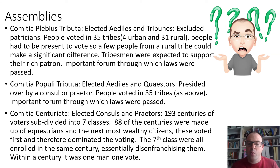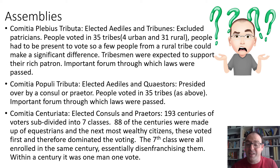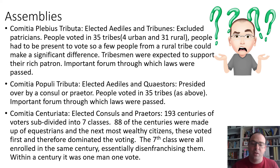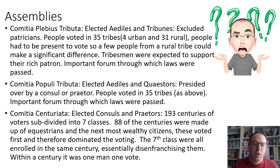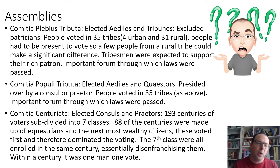Turning to the assemblies: the comitia plebis tributa elected aediles and tribunes, excluded patricians, and people voted in the 35 tribes. Since you had to be present to vote, a rural tribe could be dominated by a small group of people with the money, wealth, and influence to travel to Rome. Tribes were expected to support their rich patrons, which is why Rome is considered an oligarchy — the wealthy ruling group tended to control most things. It was an important forum through which laws were passed. The comitia populi tributa also elected aediles and quaestors, was presided over by a consul or praetor, people voted in the 35 tribes, and similarly served as an important law-passing forum.